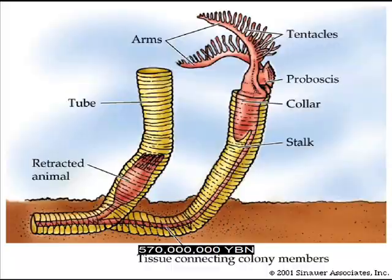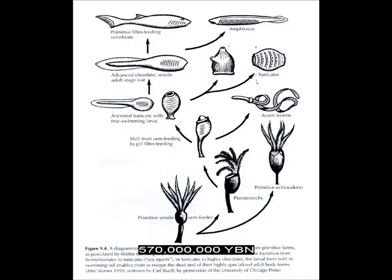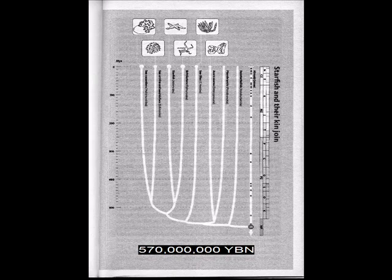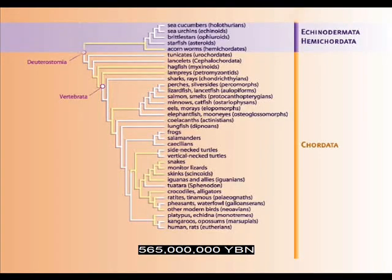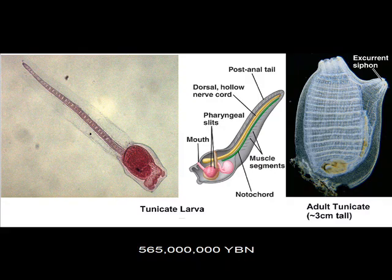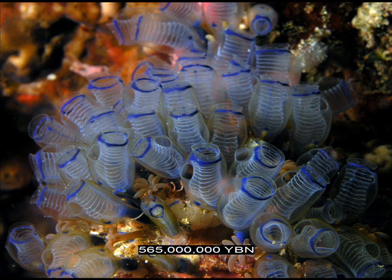Deuterostome hemichordates evolve — terebranths, acorn worms. Adult terebranths are sessile, fastening to solid structures, but the younger larval form is free swimming and is thought to have evolved into tunicates and then the first fish. Deuterostome echinoderms: sea cucumber, sea urchins, sand dollars, starfish. Deuterostome phylum chordata evolves. Chordates are a very large group that includes all tunicates, fishes, amphibians, reptiles, mammals, and birds. Chordates get their name from the notochord — the cartilage rod that runs along the back of the animal in the embryo if not in the adult. Earliest extant chordate: tunicates evolve. Sea squirts. First fish. Earliest extant fish, lancelets. First liver and kidney.